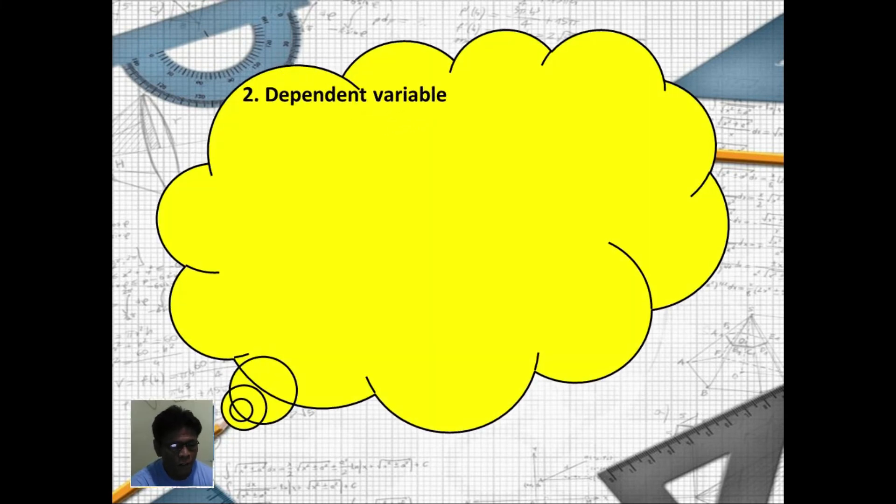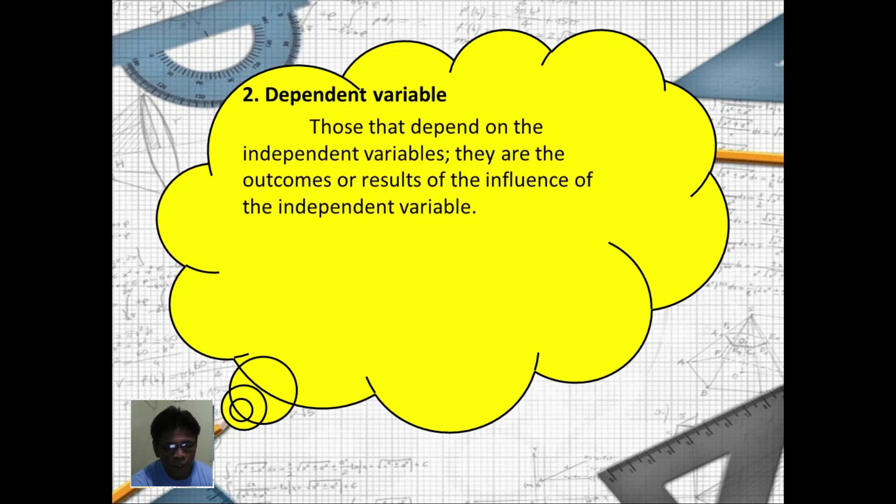Now we have also a dependent variable. Those that depend on the independent variables. They are the outcomes or result of the influence of the independent variable.